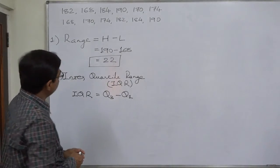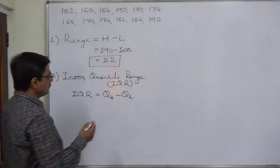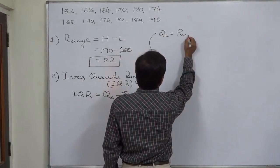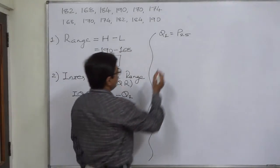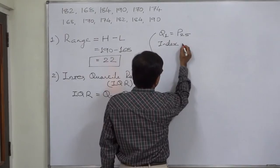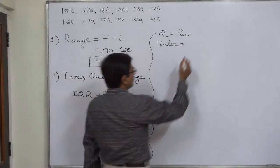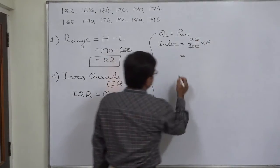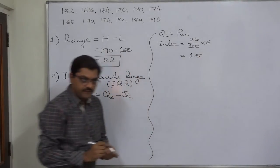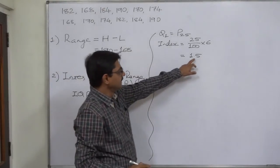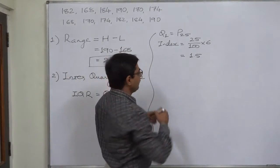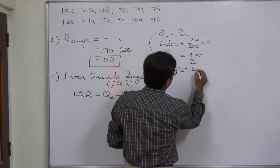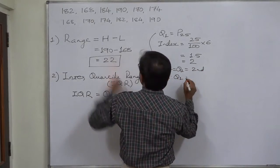Now, for this purpose, first we have to determine the values of Q1 and Q3. Let us find Q1, that means P25. For that purpose, we have to find the index. The index for P25 is 25/100 × 6, which comes to 1.5. If the index is not an integer, we take the next integer value, which is 2. So our P25 or Q1 is the second data value. Therefore, Q1 equals 170.